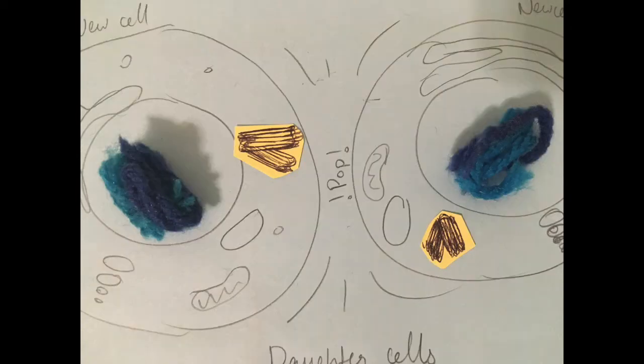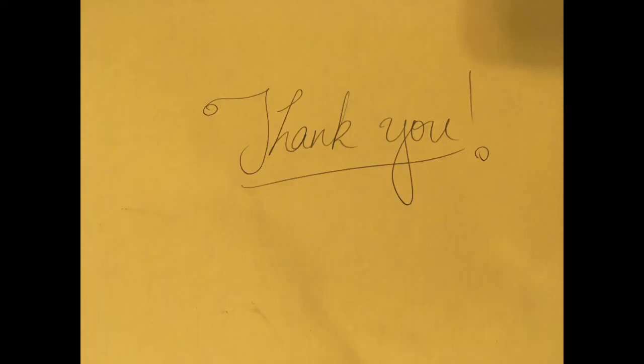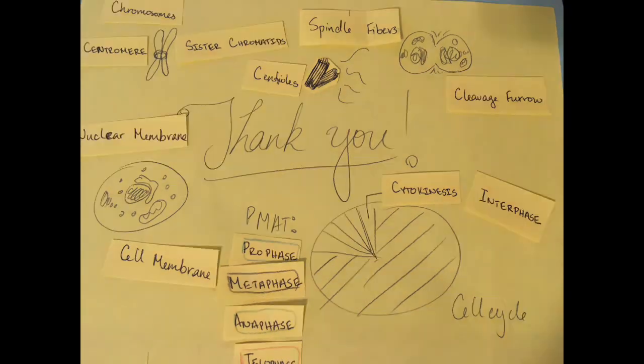Once the cleavage furrow is wide enough, the daughter cells break apart in what is called cytokinesis. And there you have it, the cell cycle. Thank you very much!